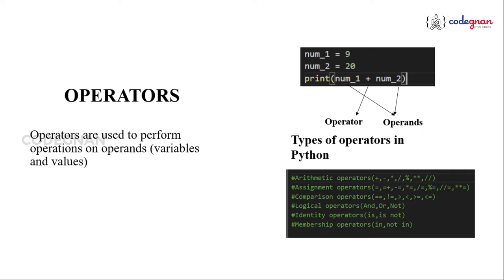We have two identity operators: `is` and `is not`. Let us dig into the practical part where I will clearly explain how identity operators differ from the comparison equal-to operator. I will prove it.